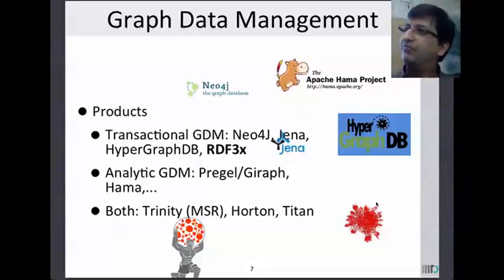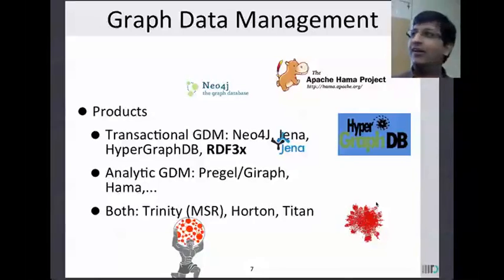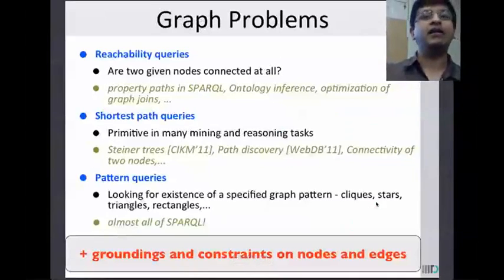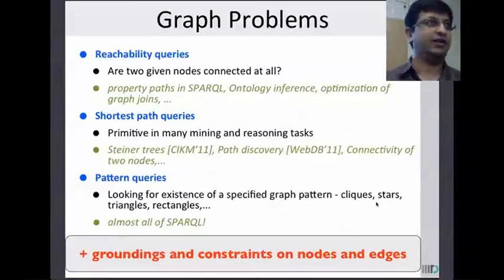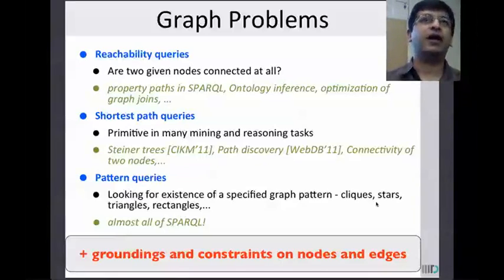You can easily extrapolate this to even more complicated settings. Basically, distance in a graph is an extremely fragile concept — it is semantic distance. You add one edge and your data changes drastically. So let us move on and look at what the standard graph problems are and how they relate to the linked open data setting.